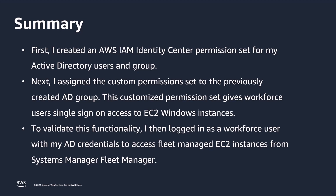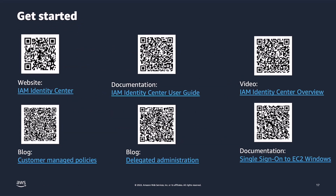Let's summarize what we learned from this demo. First, I created an AWS IAM Identity Center permission set for my Active Directory users and group. Next, I assigned the custom permission set to the previously created Active Directory group. This customized permission set gives workforce users single sign-on access to EC2 Windows instances. To validate this functionality, I then logged in as a workforce user with my AD credentials to access Fleet Manager EC2 instances from Systems Manager Fleet Manager. Now that you have seen how easy it is to enable single sign-on access to Amazon EC2 Windows instances for your workforce users, here are some more resources for you to get started with AWS IAM Identity Center. Please pause the video at this point and scan the QR code to learn more about these resources. Thank you.